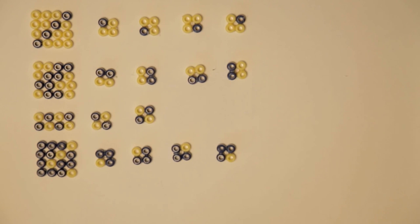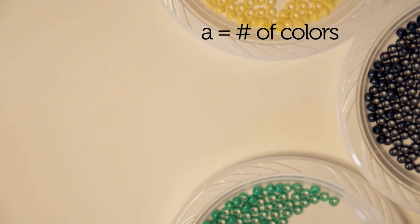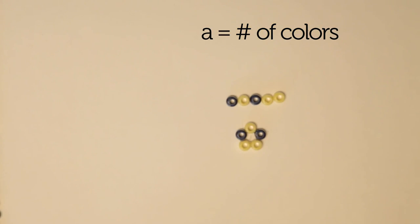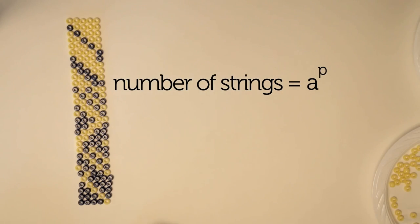And amazingly, he just stumbled onto Fermat's little theorem. Given A colors and strings of length P, which are prime, the number of possible strings is A times A times A P times, or A to the power of P.